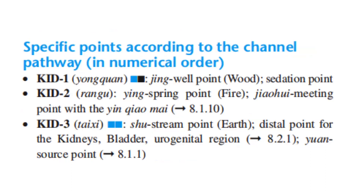Specific points according to the channel pathway in numerical order. Kidney 1 is the Jing Well Point, Wood point, and also the sedation point. Kidney 2 is the Ying Spring Point, Fire point, and also the Jiao Hui meeting point with the Yin Qiao Mai. Kidney 3 is the Shu Stream Point, Earth point, and the distal point for the kidneys, bladder, and urogenital region. It is also the Yuan Source Point of the kidney.